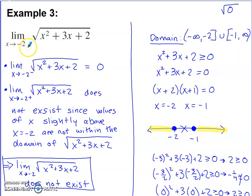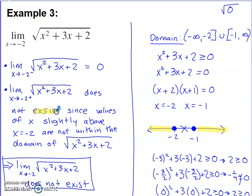Why is that useful? On the smaller side of negative 2, I am in the domain of the function — that gives me the green light to plug negative 2 in for x, giving square root of 0, which is 0. But on the bigger side of negative 2, values of x slightly above negative 2 are not in the domain, so that one-sided limit does not exist. When one of the one-sided limits doesn't exist, they can't be equal, so the general limit does not exist.